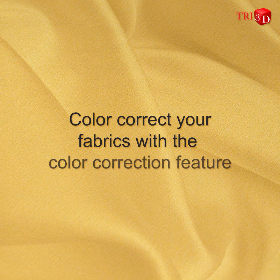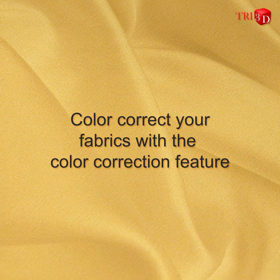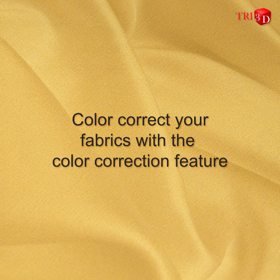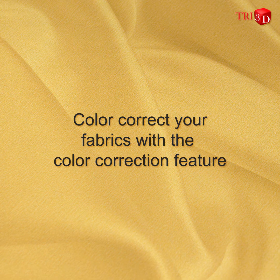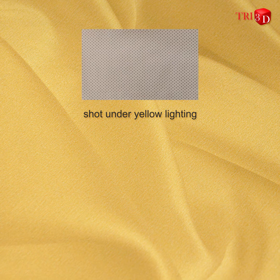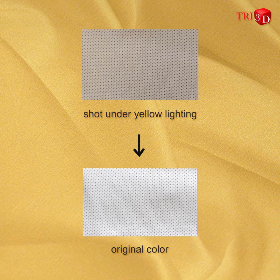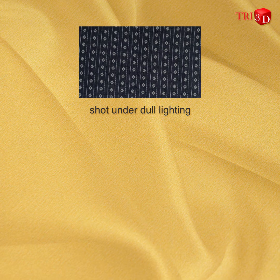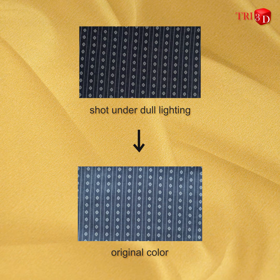Color correct your fabrics with the color correction feature. For example, see this fabric shot under yellow lighting — this might not be useful to work with compared to its original fabric. Or this fabric, shot under dull lighting, which is much different from its original.